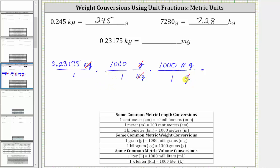And now we multiply. Notice how we have a denominator of one, and therefore we just have 0.23175 times 1,000 times 1,000, which is equal to 231,750, and the units are milligrams. So 0.23175 kilograms equals 231,750 milligrams.